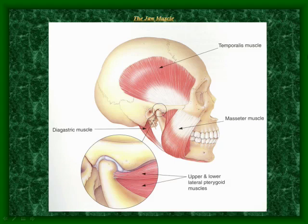The human skull consists of a group of muscles: the temporalis, the masseter, the diagastric, and the upper and lower lateral pterygoid muscles. These muscles are used for the mastication of food, or in other words, chewing. The muscles are therefore known as the muscles of mastication.